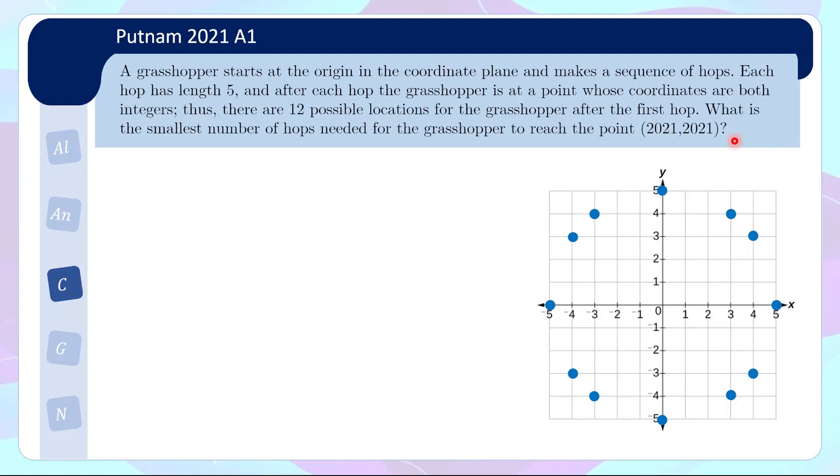So an interesting sounding combinatorics problem. And I think the solution is actually quite intuitive. Now one of the first things that you will probably try is to form a path from the origin to (2021,2021), while heuristically trying to minimize the number of hops needed. So one good idea would be to try and go along the north-east direction as much as possible, so exploiting the possibility of going along (3,4) and (4,3).